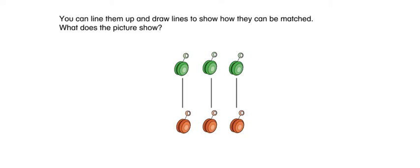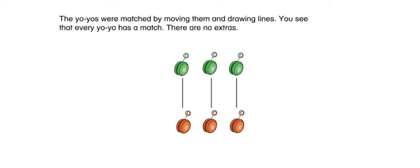What does the picture show? The yo-yos were matched by moving them and drawing lines. You see that every yo-yo has a match. There are no extras.